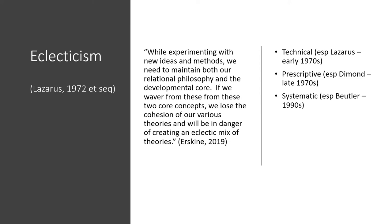A surprising number of therapists say that their approach is eclectic — by this they mean they customise the therapeutic process for each individual using whatever treatment or combination of treatments they believe will be most effective for the particular problem. Bear in mind that most modalities have their own specific core model of human development, and that to be deemed sufficiently competent to practise them typically takes a student at least two years' training beyond the initial two to three years of counselling skills training. In practice, most eclectic therapists have studied one approach in depth, encountered seemingly useful ideas from other modalities through articles or short training sessions, and then try them out on their clients. It could easily be argued that this is unethical.